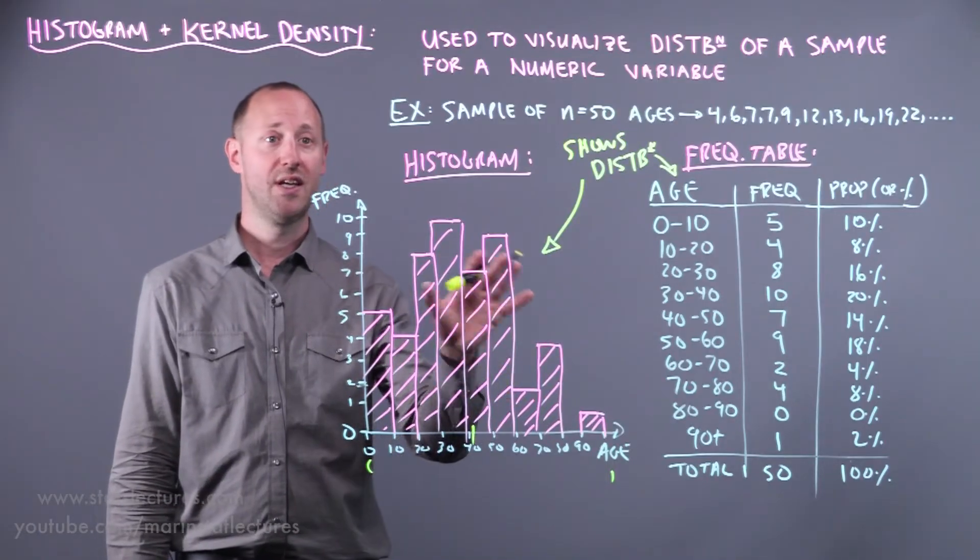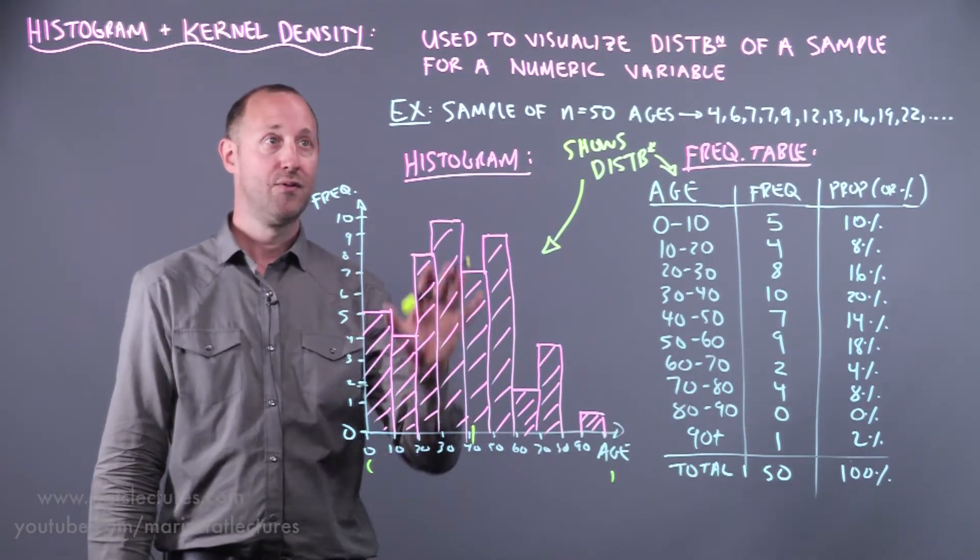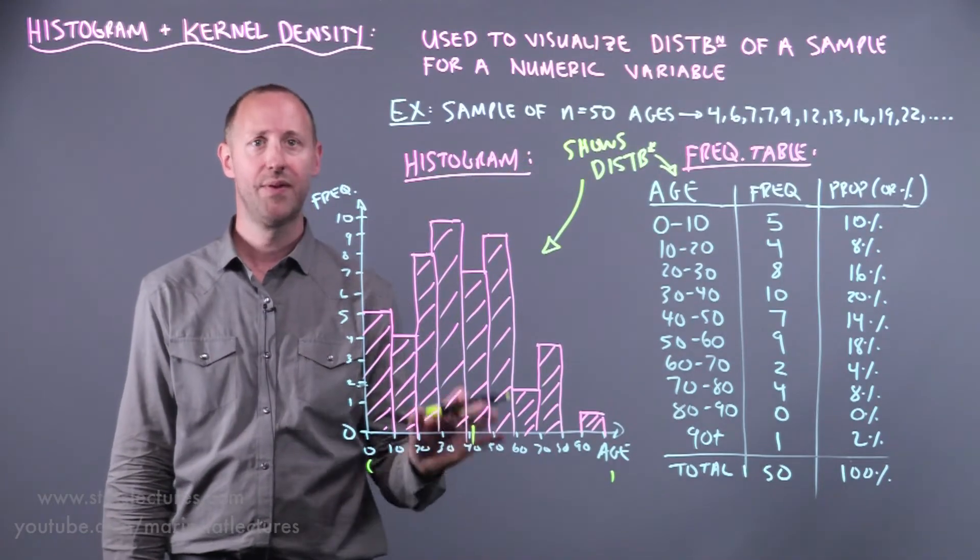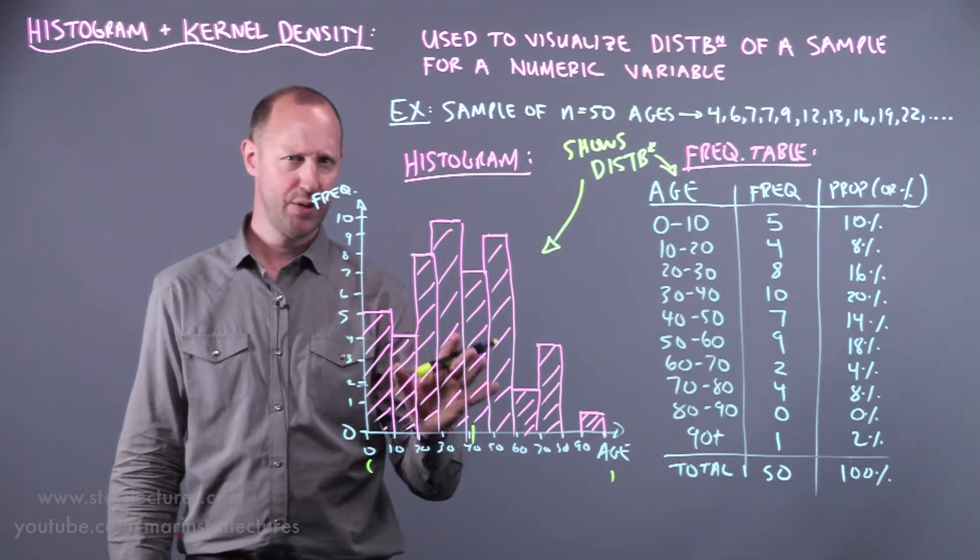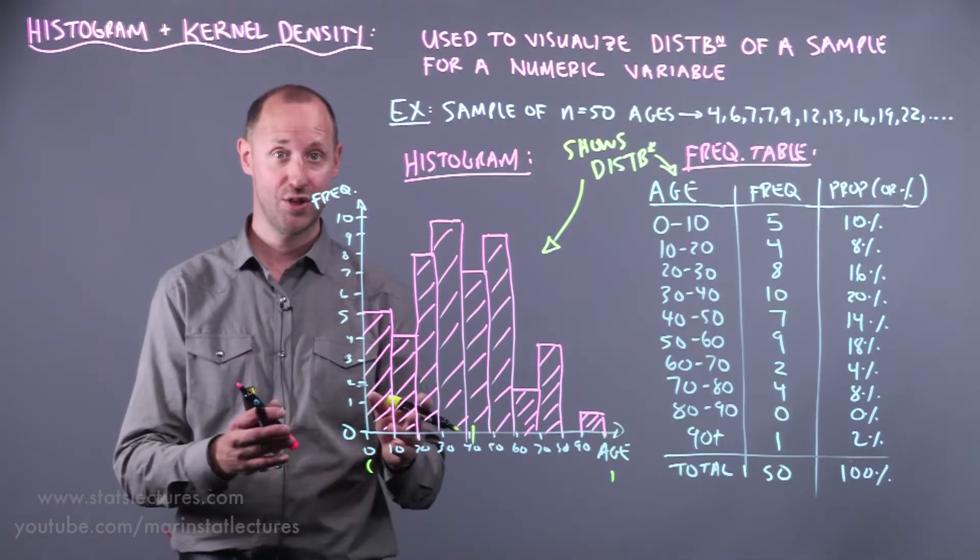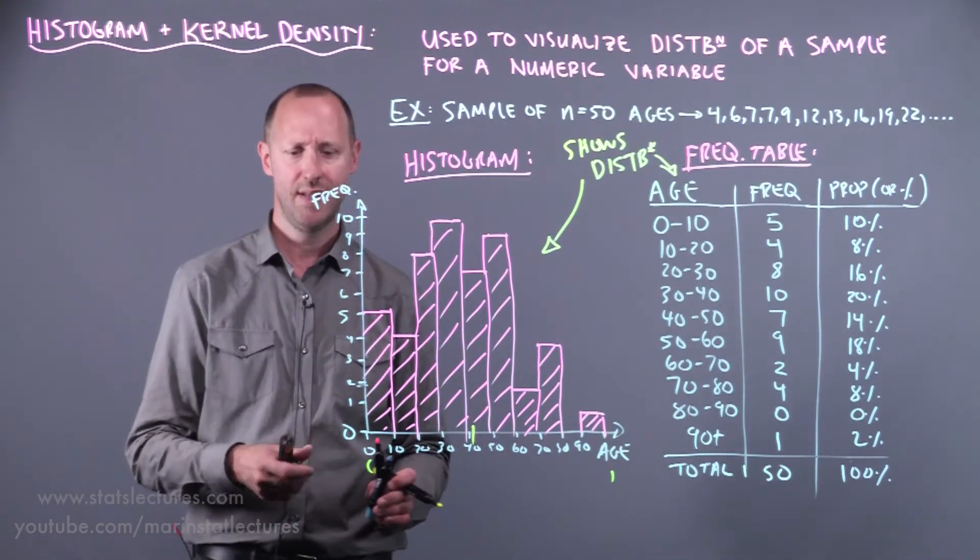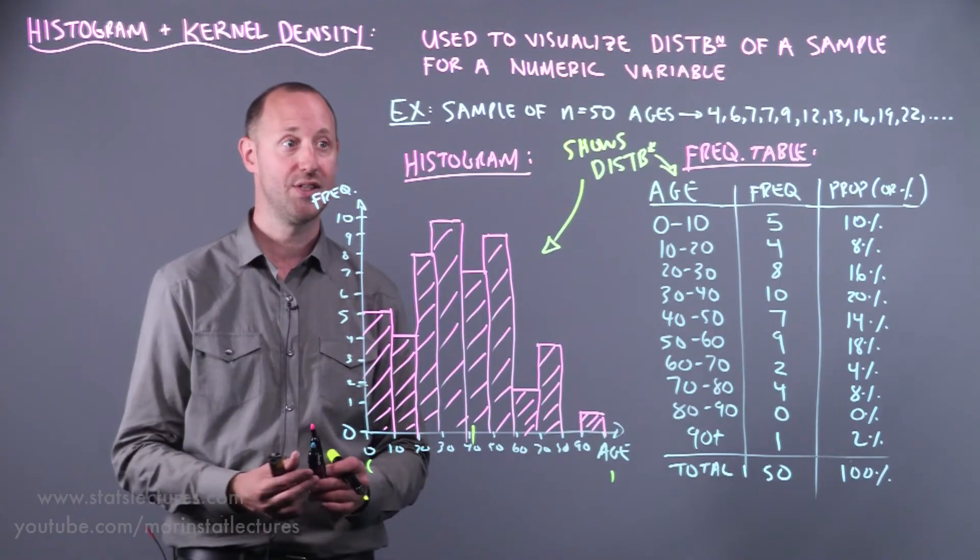And it's also worth mentioning another plot for summarizing a numeric variable. The distribution of a numeric variable is a box plot. Which is similar to a histogram. It's similar in what it tries to show but a different way of trying to summarize a numeric variable. Later we're going to kind of build on all these concepts just mentioned here.